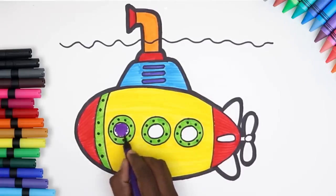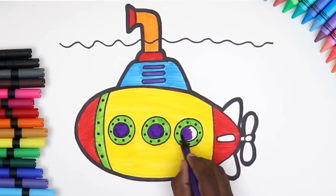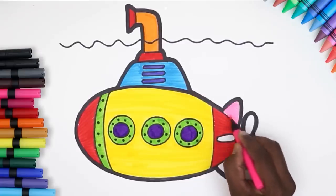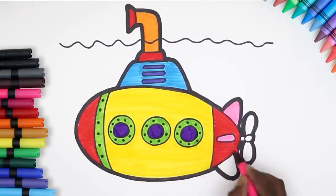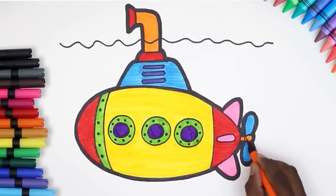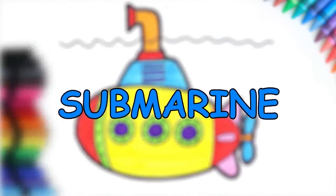And now some green for the windows. This is turning out great. Use purple for the smaller circles. Pink wings. And a blue and orange fan. Ta-da! Here is our submarine, kids. Are you ready for an underwater adventure?